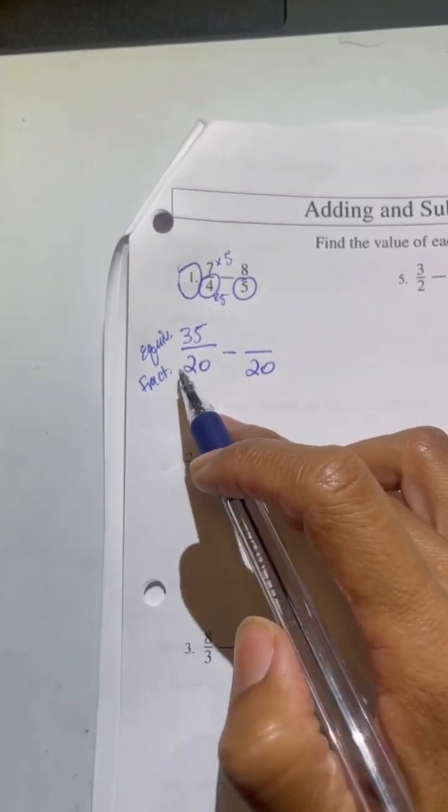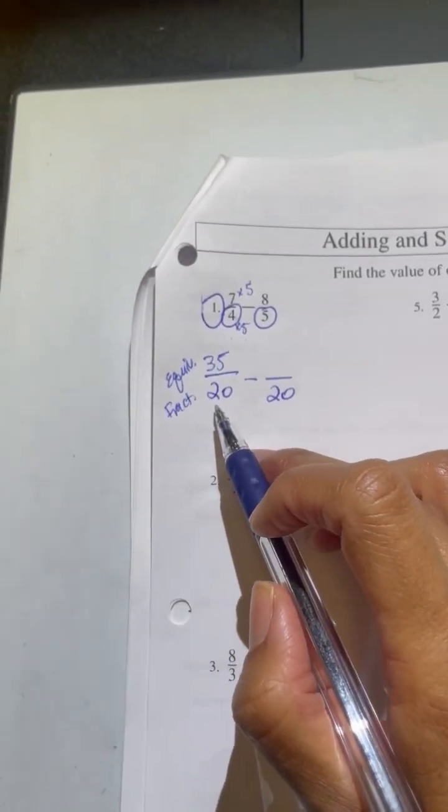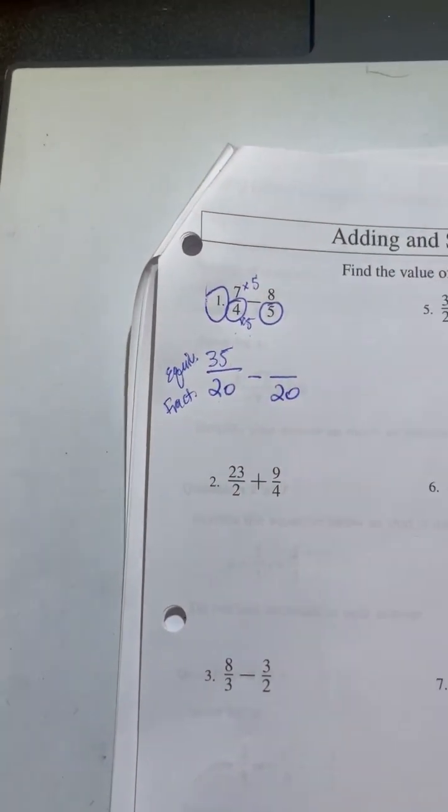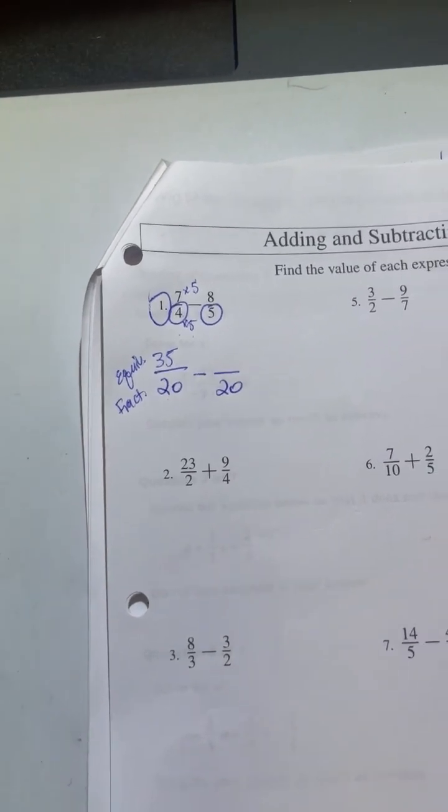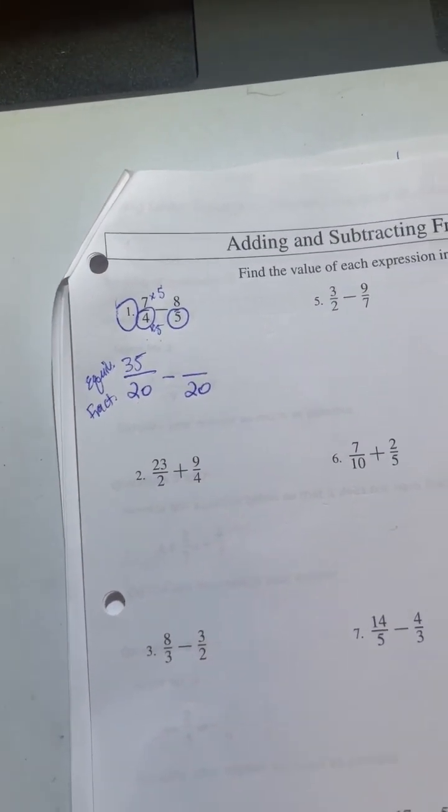Equivalent fractions, meaning 35 over 20 is actually exactly the same thing as 7 over 4, just it's a multiple of it. But if you were to measure it or draw it or put on a number line, they're actually the same exact quantity. They're called equivalent fractions. We're not changing the quantity, we're just rewriting it.